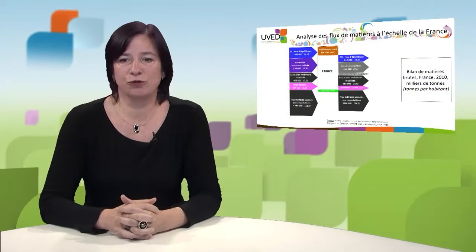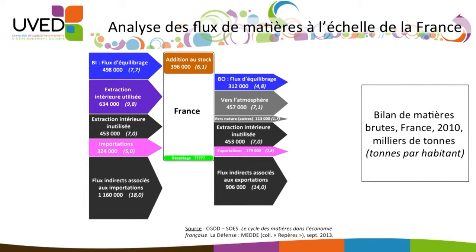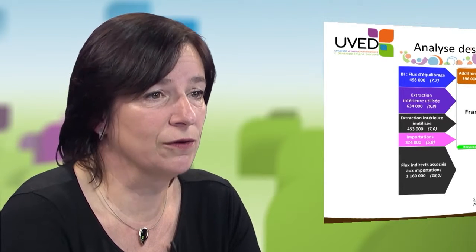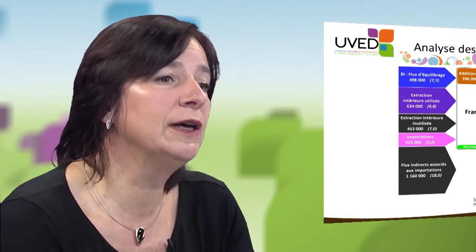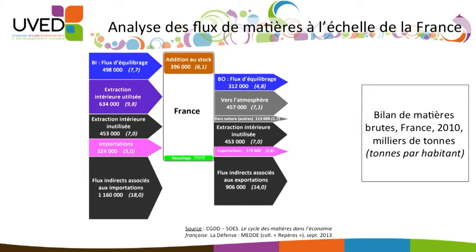Looking at the outputs from the system, starting from the bottom: exports are slightly less important than imports. Non-used domestic extraction is immediately sent back to the environment. The two grey arrows represent what is sent back to nature — to the atmosphere as carbon dioxide and greenhouse gases, and also what we send back to soils and water, everything we dump as a society. These flows to the environment are greater than exports, greater than imports, and almost identical to what we extract domestically and use.